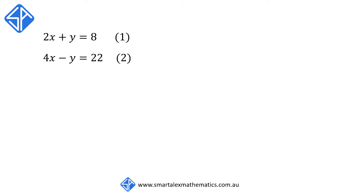For this example, we have 2x plus y is equal to 8 and 4x minus y is equal to 22. We see that equation 1 has got a plus y term and equation 2 has got a minus y term. These terms are the same except the sign, and when the signs are different, what we do is we add the two equations.